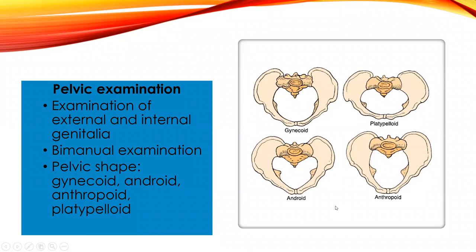A pelvic examination is usually done by a physician or midwife to assess the pelvis shape. There are four types: gynecoid, platypelloid, android, and anthropoid. The desired type is gynecoid, the easiest shape for a baby to fit through. The others can permit birth depending on baby size, but that's estimated based on examination. We say a woman has a proven pelvis if she has delivered a baby through it.